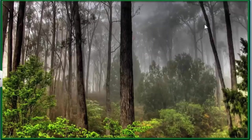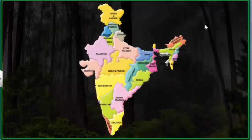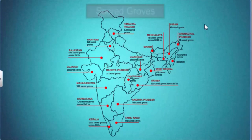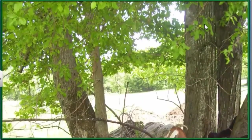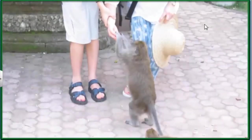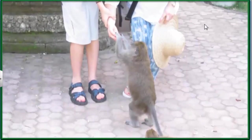In several parts of India, parts of forests or complete forests are protected by communities since they are considered to be abodes of gods and goddesses. Such protected forest areas are called sacred groves. Besides trees, some animals like monkeys are also considered sacred and fed at places of worship.